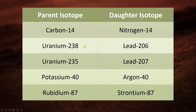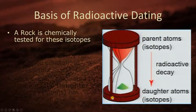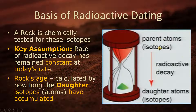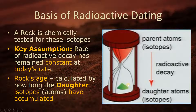Carbon is a parent isotope and it turns into nitrogen, the daughter. Uranium turns into lead, potassium decays into argon, and rubidium turns into strontium. If a rock is chemically tested for these isotopes, there's a key assumption: the rate of radioactive decay has remained constant at today's rate. The rock's age is calculated by how long the daughter isotope atoms have accumulated — just think of an hourglass with sand falling through it. That's the radioactive decay mechanism.